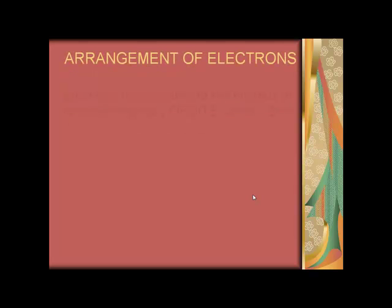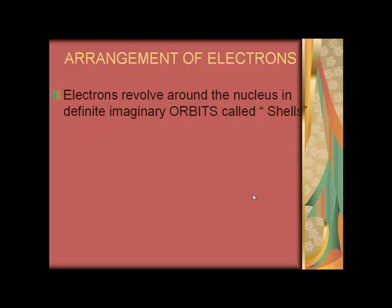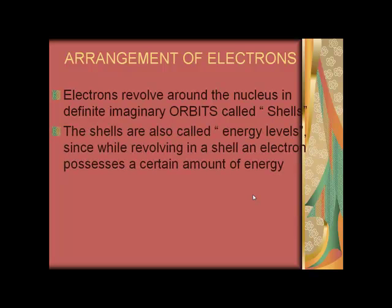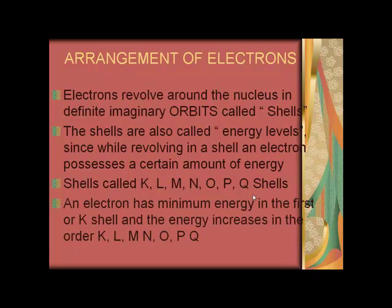Arrangement of electrons: Electrons revolve around the nucleus in definite imaginary orbits called shells. The shells are also called energy levels, since while revolving in a shell, an electron possesses a certain amount of energy. Shells are called K-L-M-N-O-P-Q shells. An electron has minimum energy in the first or K shell and the energy increases in the order of K-L-M-N-O-P-Q.